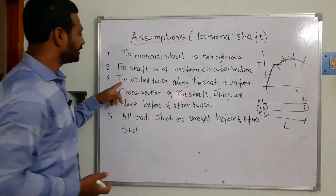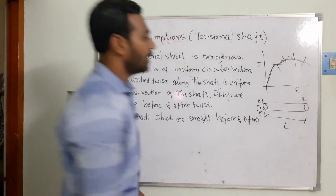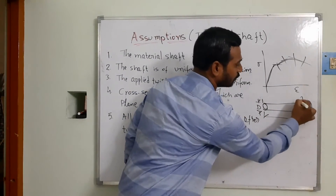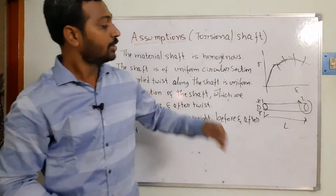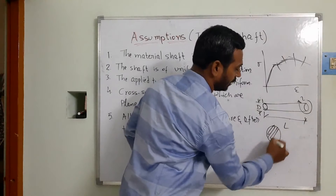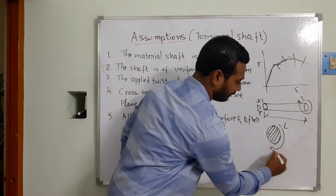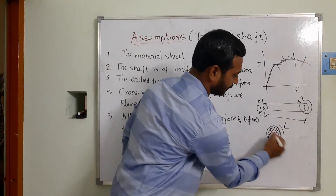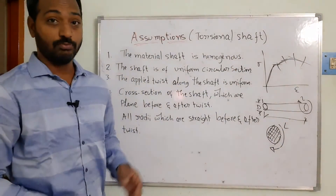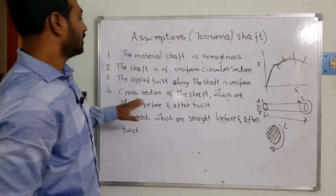The next assumption is that the applied twist along the shaft is uniform. When a twist is applied at one end, the cross-section and along the length will experience a uniform twist throughout. That is the assumption here.